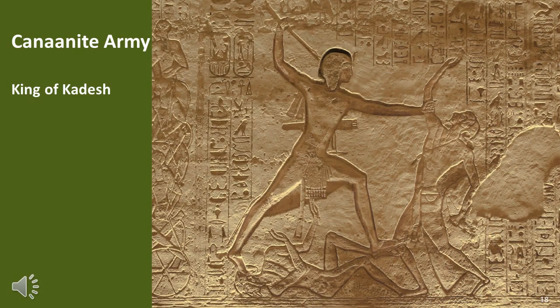The size of the Canaanite army is unknown, and even its commander is a bit dubious, although we have a better idea of that. It is thought the commander was the King of Kadesh, who fielded an army of between 10,000 and 15,000 men. I'll use the high figure, although considering how easily Egypt managed to defeat the Canaanites, it's possible this may be too high — though troop quality could also be a factor.